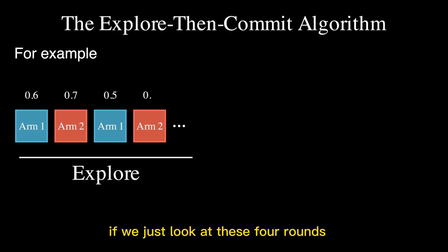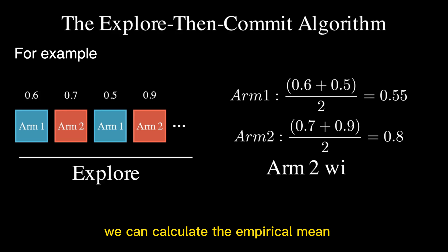If we just look at these four rounds, we can calculate the empirical mean of the rewards for each arm. We can see that the empirical mean for arm 1 is 0.55 and the empirical mean for arm 2 is 0.8. Arm 2 wins.